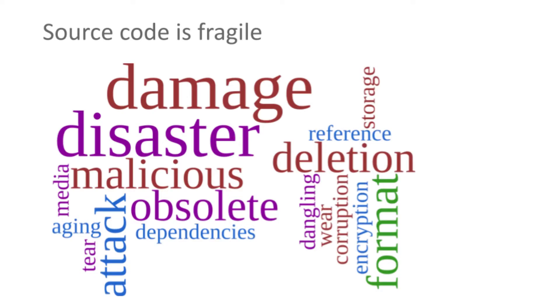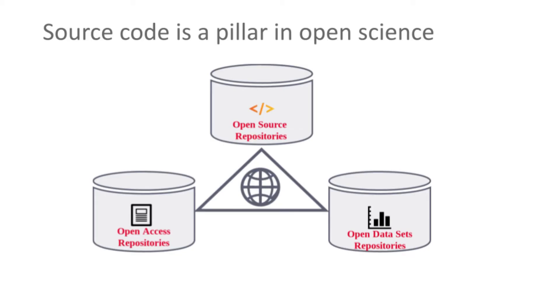Why do we want to archive software? Software source code is fragile — it can disappear. Many researchers have told me the story of having the source code of their thesis in a computer lab and not knowing what happened to it. This source code is probably lost forever, even if the thesis itself is safely archived. It is important to note that software source code has an essential role in research and should be archived properly alongside data and publications.